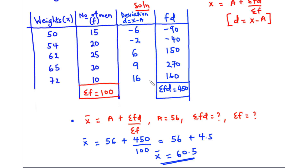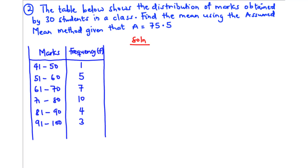That was ungrouped data. Now we solve the next question on grouped data. For question two, the table below shows the distribution of marks obtained by 30 students in a class. Find the mean using the assumed mean method, given that the assumed mean is 75.5. The table has mark intervals and frequencies — for example, between 41 and 50 there was one occurrence, and between 71 and 80 there are 10 occurrences.